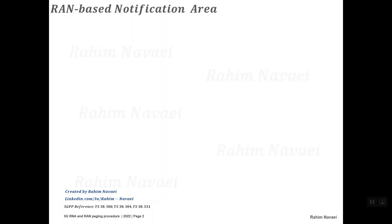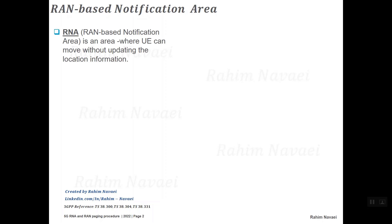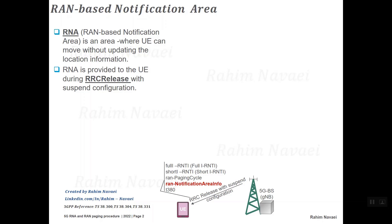Now it's time to explain about RNA — the RAN-based notification area. RNA is an area where the UE can move without updating the location information. RNA is provided to the UE when the RRC connection is suspended by the gNB, meaning the gNB sends an RRC Release with suspend configuration. After the UE receives the RRC Release with suspend configuration, from the RRC point of view, the UE state changes from RRC connected to RRC inactive.